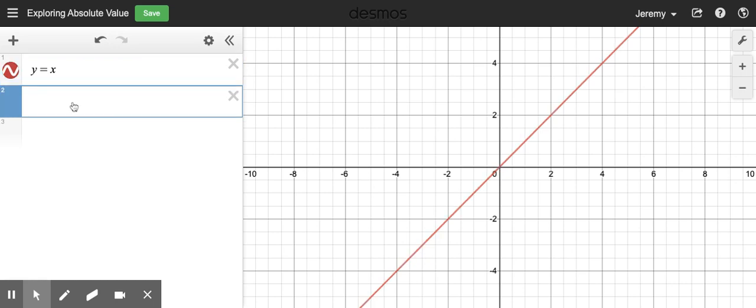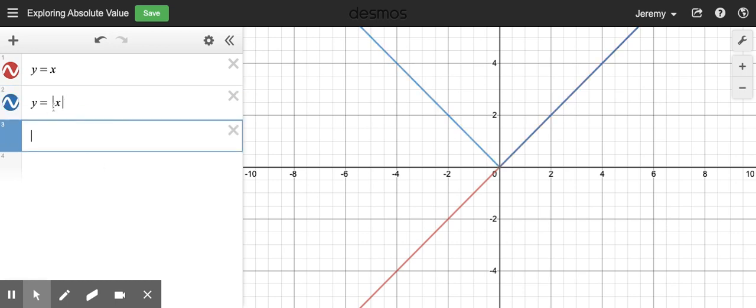And it's interesting to put that up on the graph first and then add this very simple absolute value equation, the simplest absolute value equation really, the absolute value of x is equal to y. And we get this blue v-shaped graph out of that.